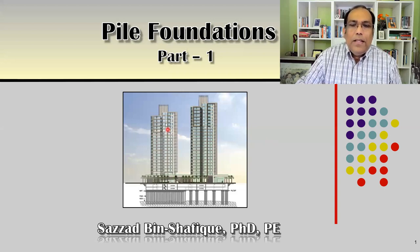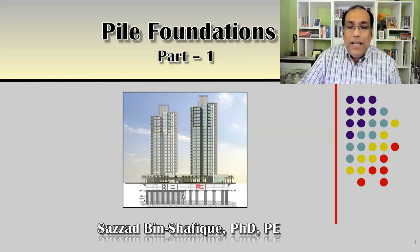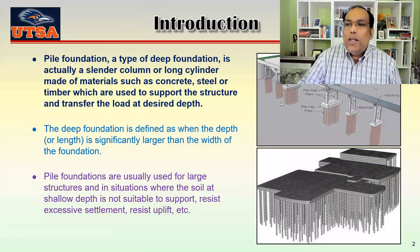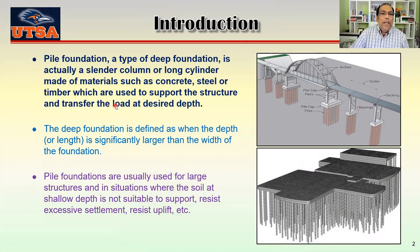You can see here there are tall buildings, and this is the ground level. You cannot see anything below here because this is in the subsurface. But you can see there are a lot of slender columns that are actually taking the load and transferring it from here to a deep layer, which is much stronger than the shallow layers. Pile foundation is a type of deep foundation — a slender column or long cylinder made of material such as concrete, steel, or timber — which is used to support the structure and transfer the load to a desired depth.